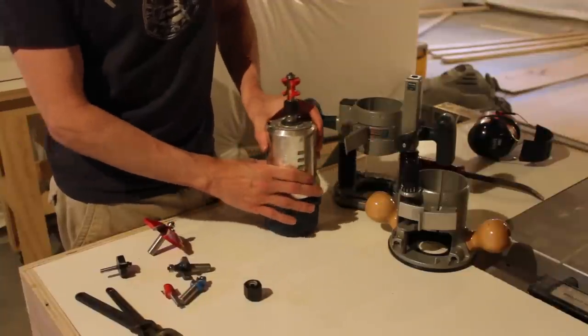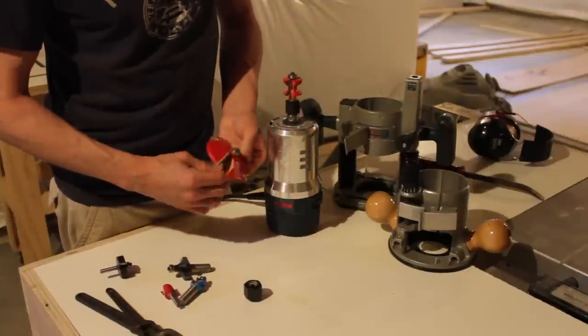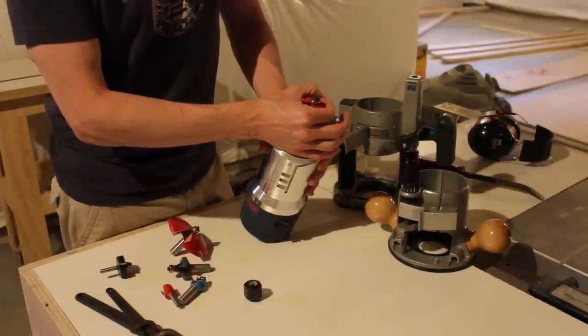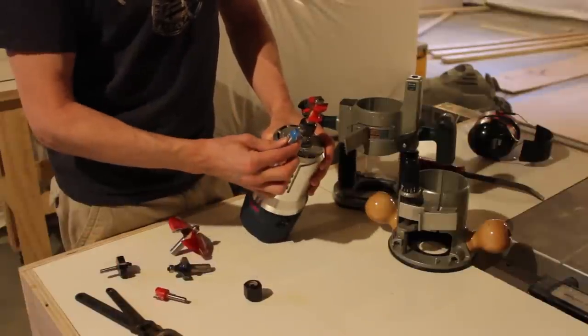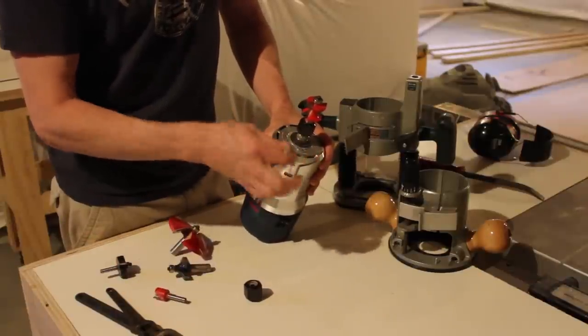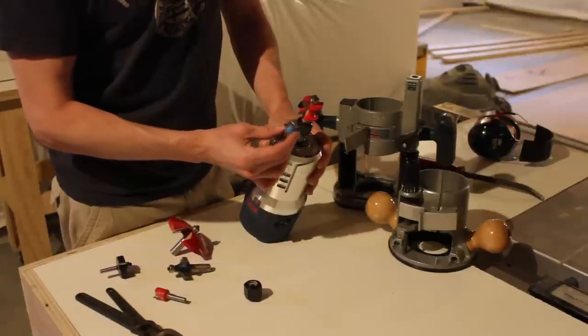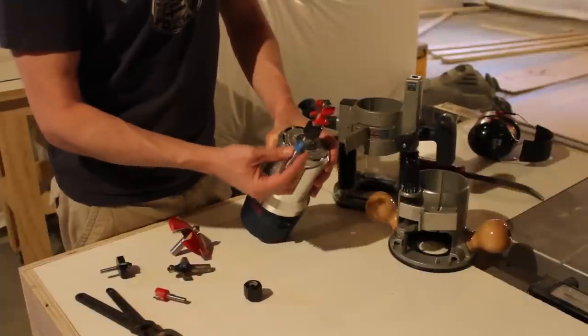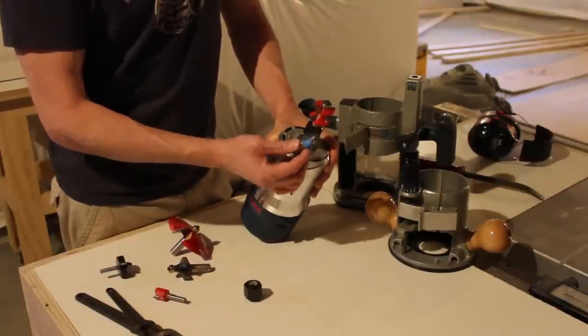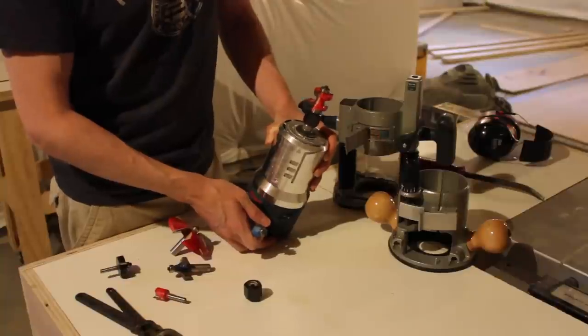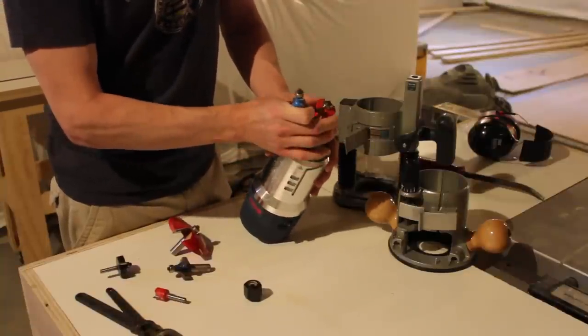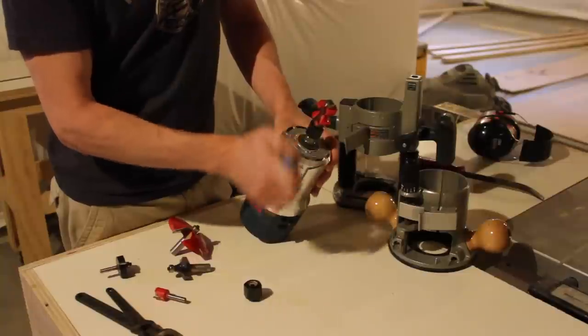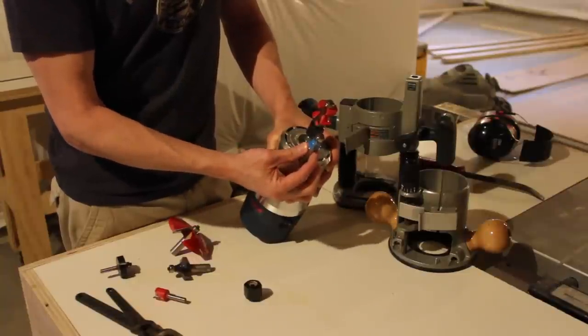Let's talk real quick about router bits. This is a fairly medium sized diameter router bit. This one is a small one, and I'm not talking about the half inch shaft, I'm talking about the actual cutting part. The speed setting is nice for accommodating the bit you're using. This speed control goes from one to six. As bits get bigger, you want to slow them down.